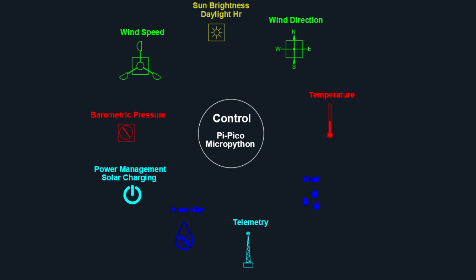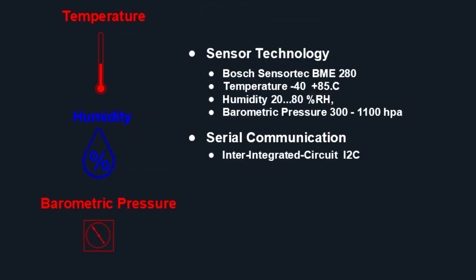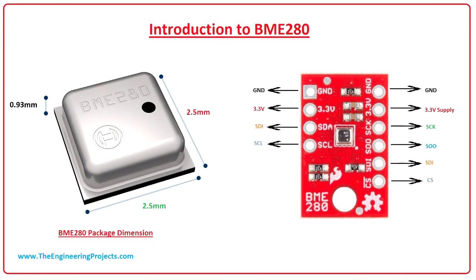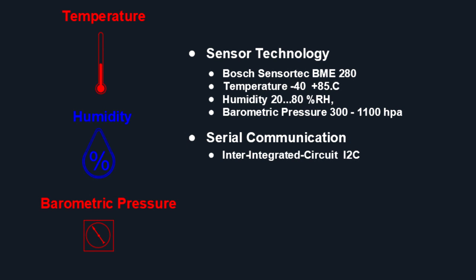So with the aid of the Bosch Sensatech BME280, I intend to measure temperature, humidity and barometric pressure. Now the BME280 is a little tiny module. It's about the size of a match head and it communicates using the I2C serial bus. So we also get to play with some serial communications in the form of I2C. Although the sensor itself is absolutely tiny, it actually delivers very good performance. It's got a temperature range between minus 40 and plus 85 degrees. Humidity is between 20 and 80% and it can measure barometric pressure between 300 and 1100 hectopascals. Let's just call it millibars.